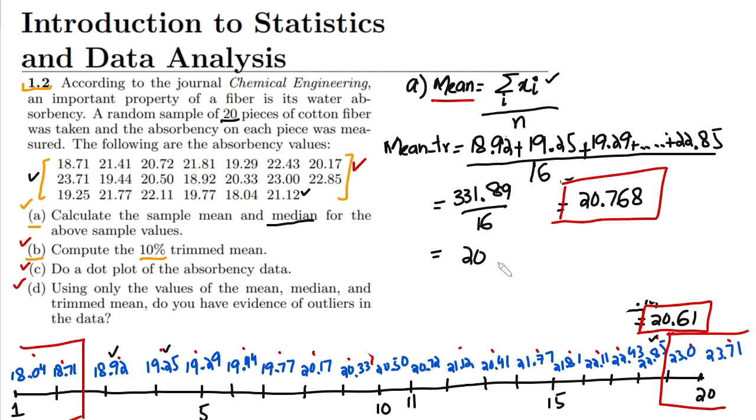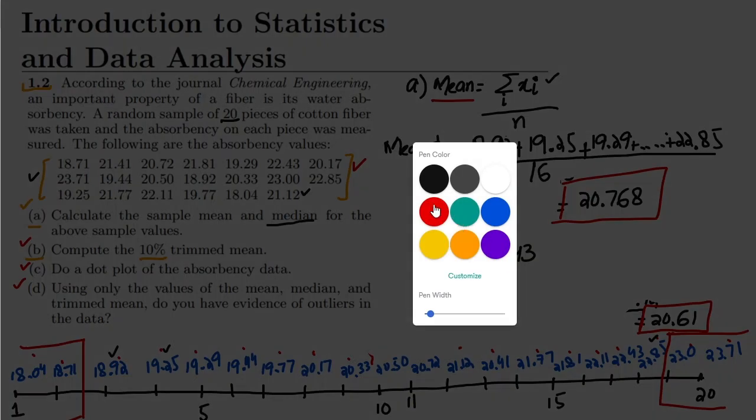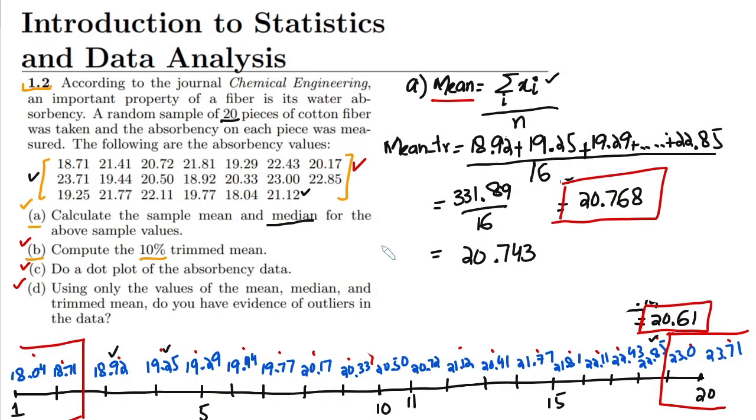So what is this? This is basically the trimmed mean. This is the actual mean, this is the trimmed mean, while this is the median of our data which we previously calculated.